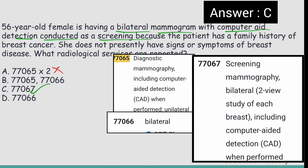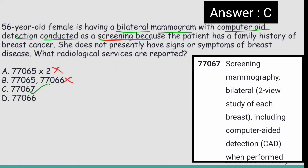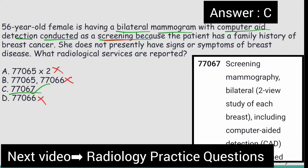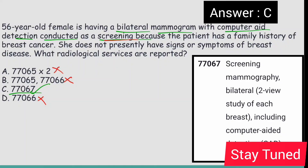Option B is wrong because 77065 and 77066 are for diagnostic mammography, but the scenario is screening mammography. Option D, 77066, is also wrong — it is for diagnostic mammography bilateral. The right answer is option C, 77067. That's it for today. In the next video we will solve more questions related to the radiology series, so stay tuned.